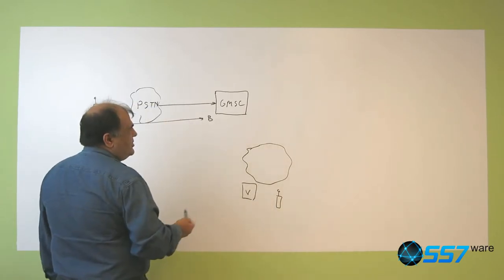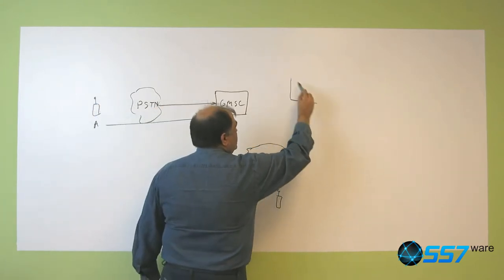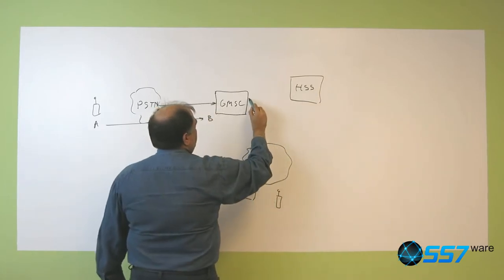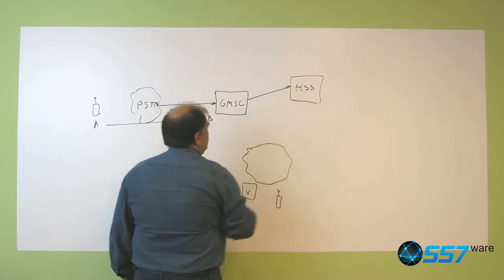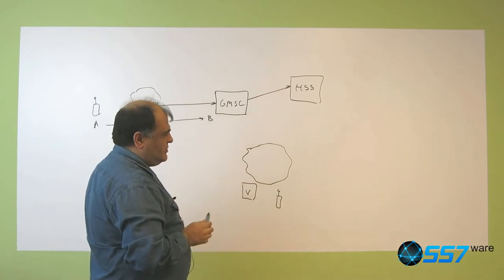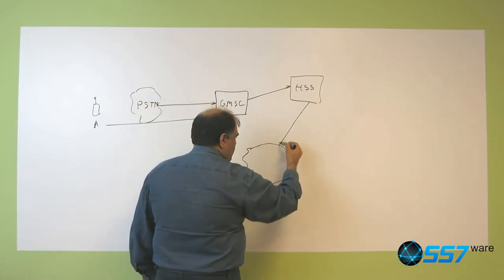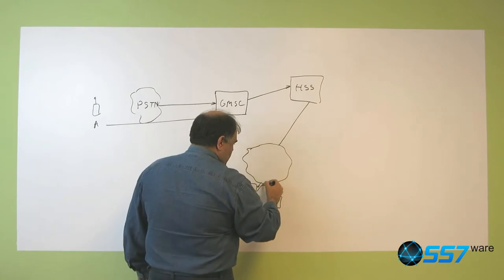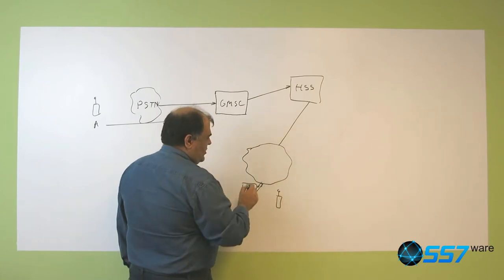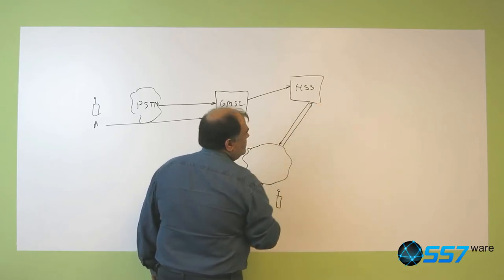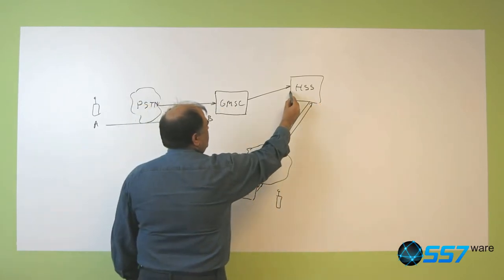What the GMSC does is interrogate the HSS for subscriber B, asking where the subscriber is. The HSS would do a request here that will return a temporary number for the visited network, which will be returned to the GMSC.